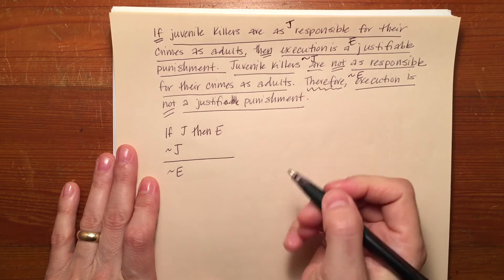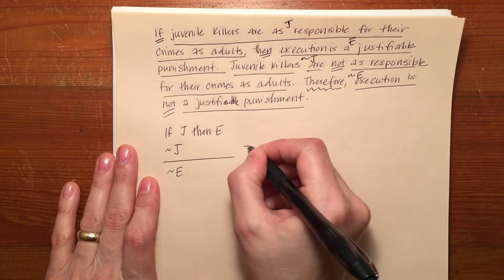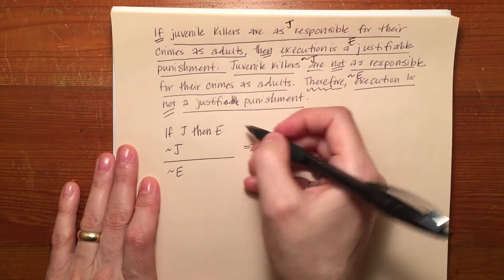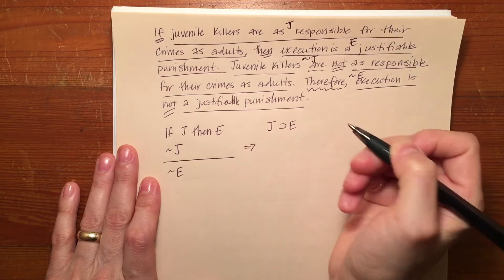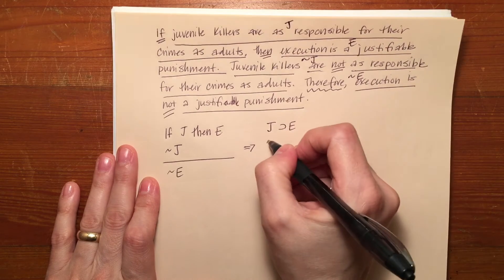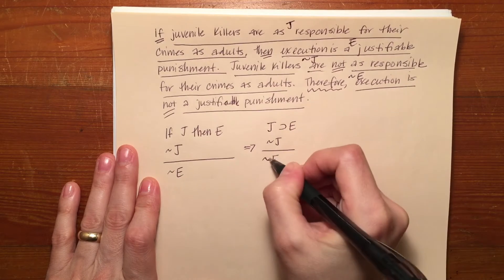Of course, the if-then can be symbolized by a horseshoe. You need not do these interim steps. I'm just showing you how I get from one place to another. So J implies E, not J, not E. There's your standard form.